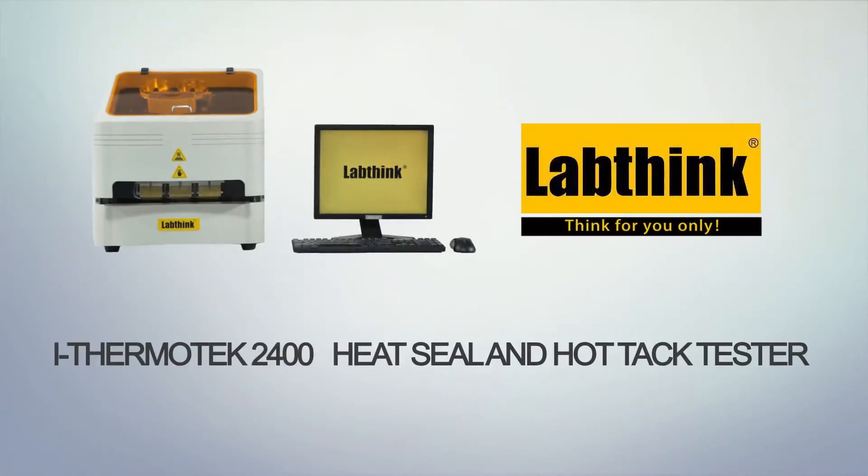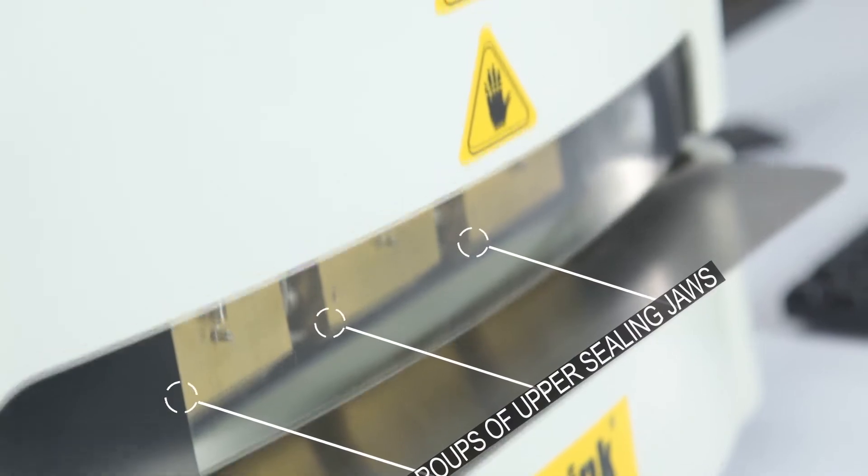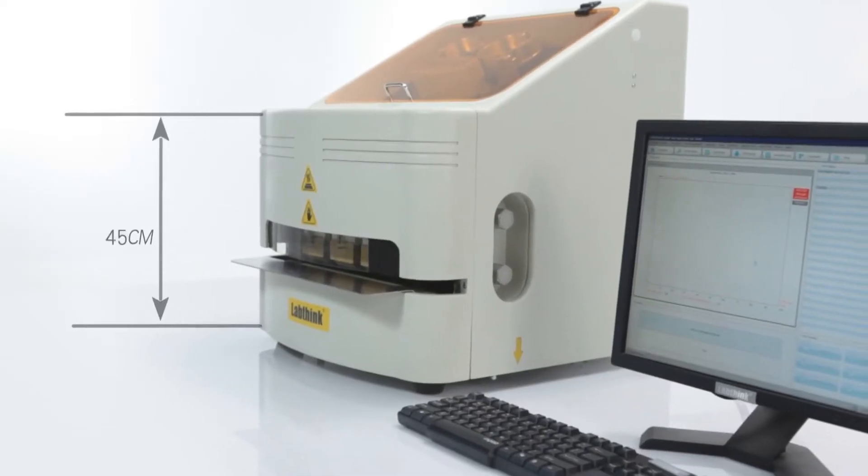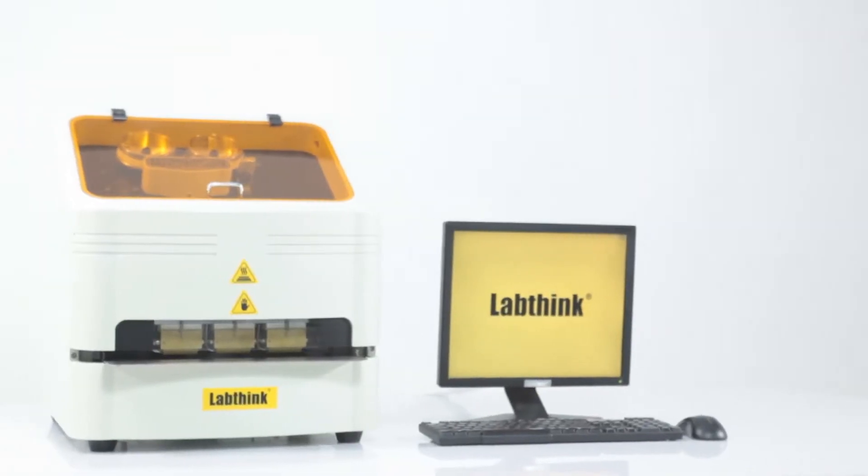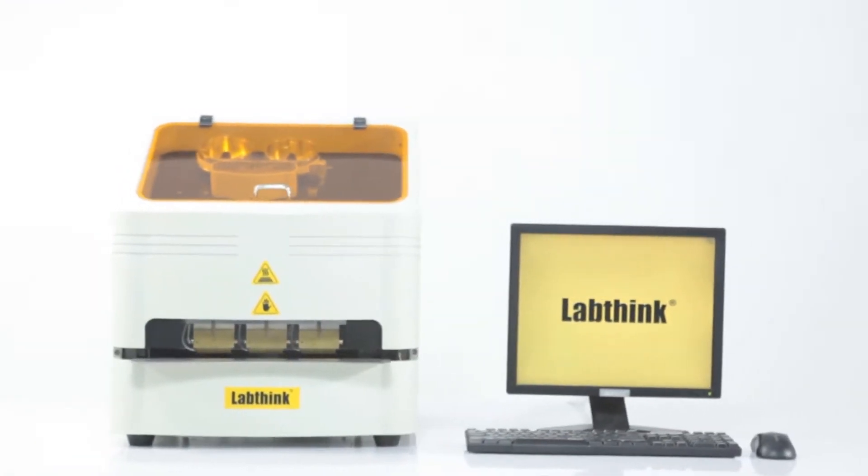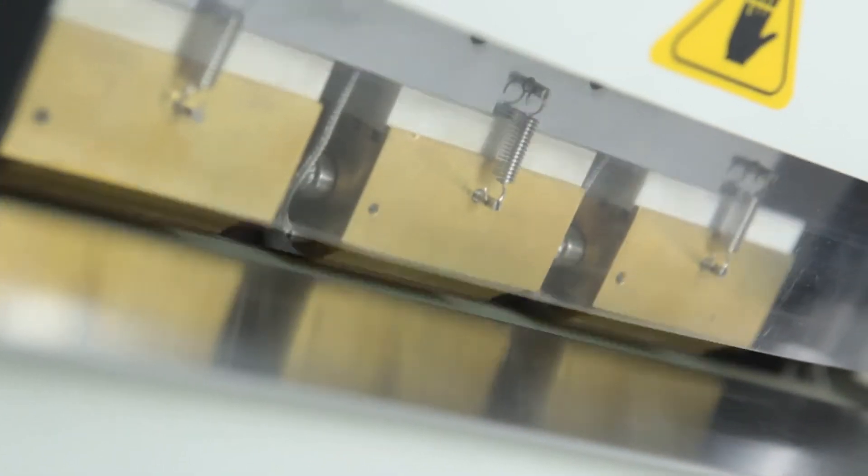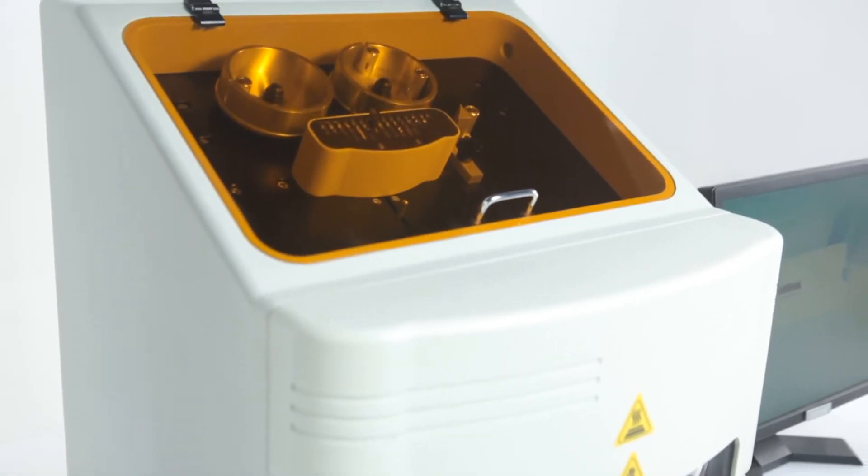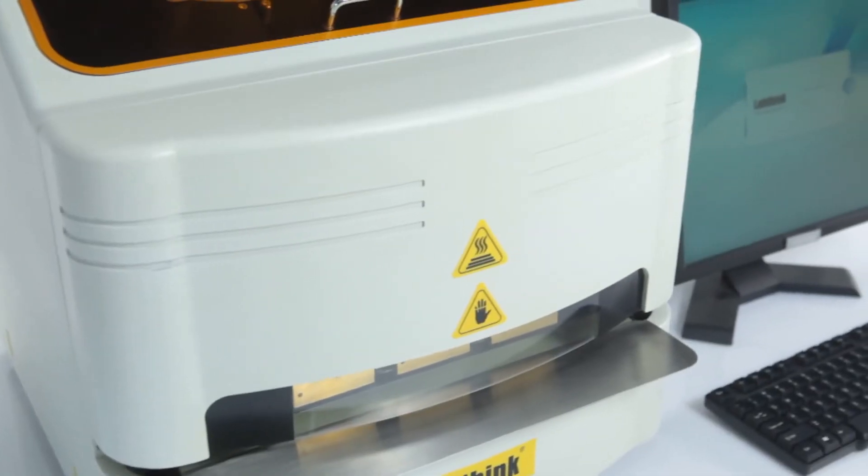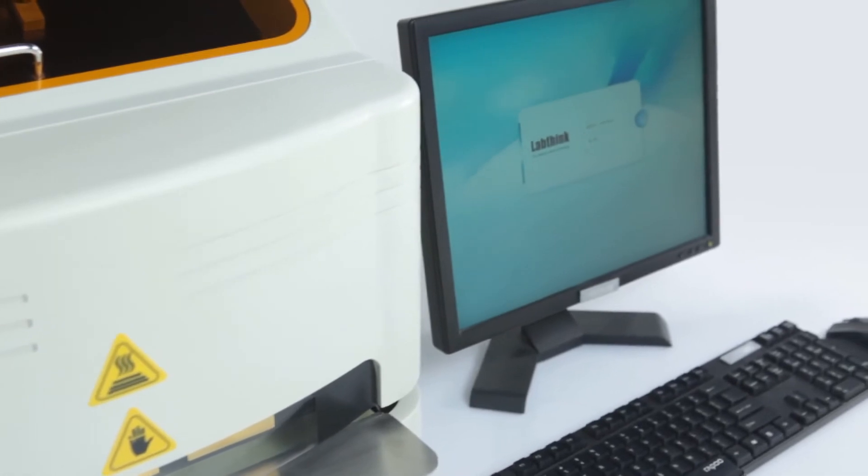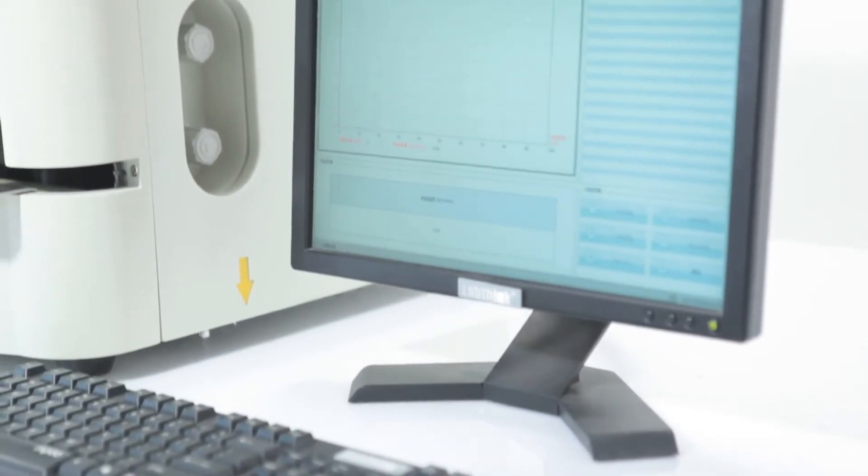i-Thermotech 2400 heat seal and hot tack tester. i-Thermotech 2400 is LabThink's new generation heat seal and hot tack tester which is used to test heat seal, hot tack properties and heat seal strength of plastic films, coated paper and other composite films.